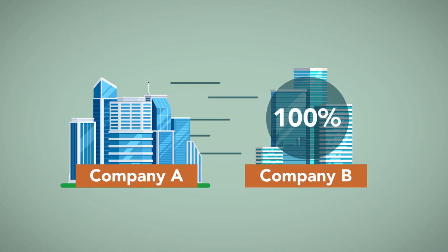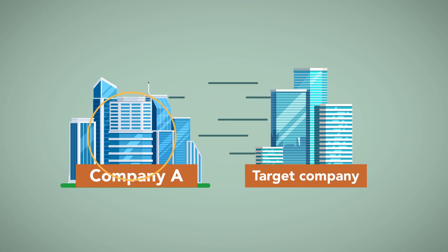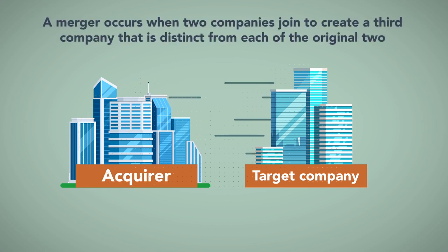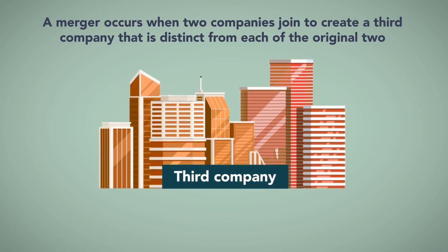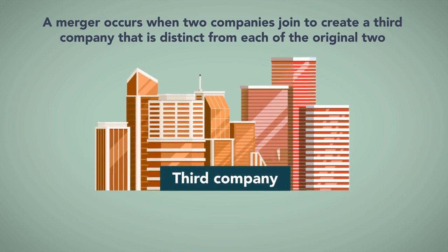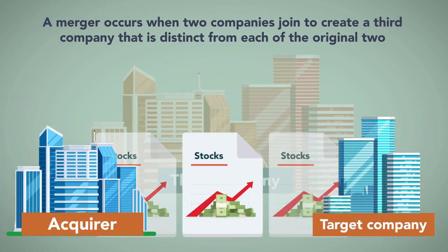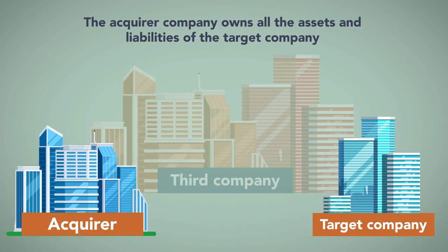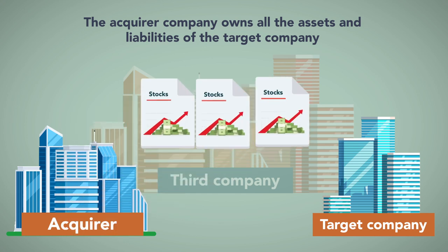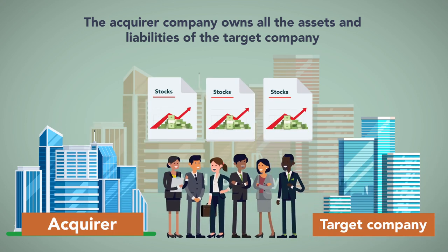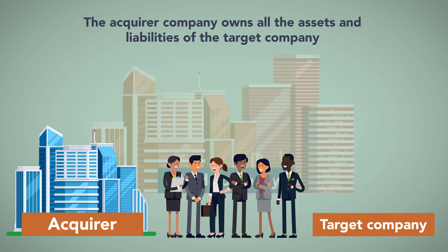An acquisition occurs when one company acquires 100% of another, non-related company. The company being acquired is the target company, while the company doing the acquisition is the acquirer. A merger occurs when two companies join to create a third company that is distinct from each of the original two. After a standard acquisition, in which the acquirer purchases all stock of the target, the acquirer company owns all the assets and liabilities of the target company. Shares of stock of the acquirer are often given to the target's stockholders as compensation for the dissolution of the target.